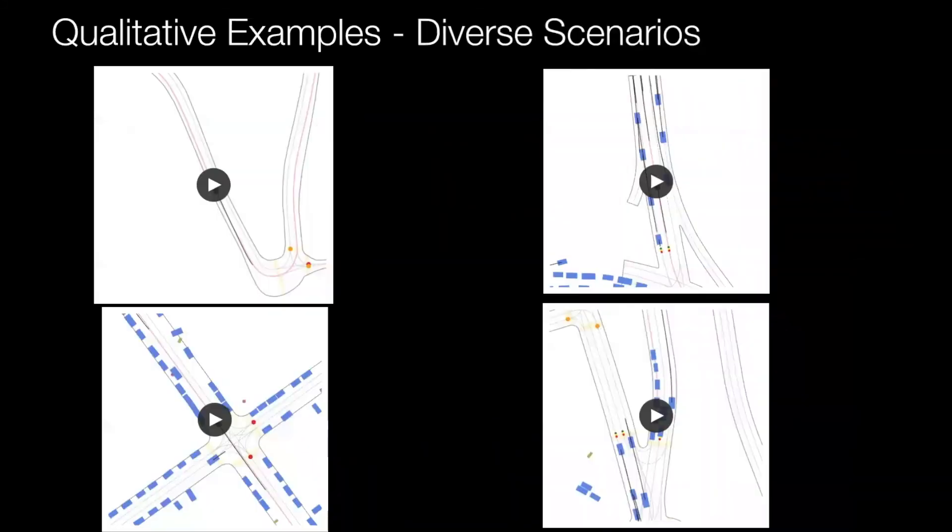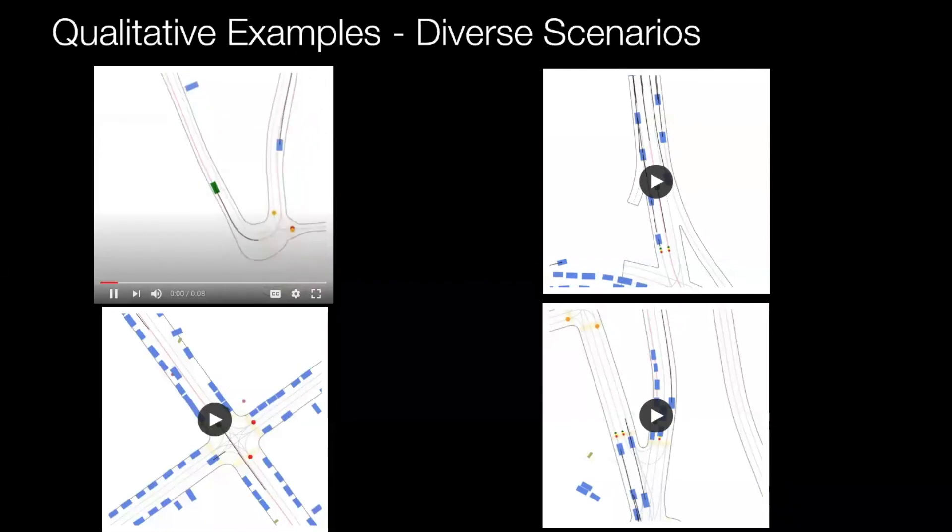Here are example scenarios selected as diverse scenes with respect to the previous challenging scenarios. In the first scenario, the SDV is making a very sharp turn due to the high-curvature motion path and not too many actors exist in the scene.